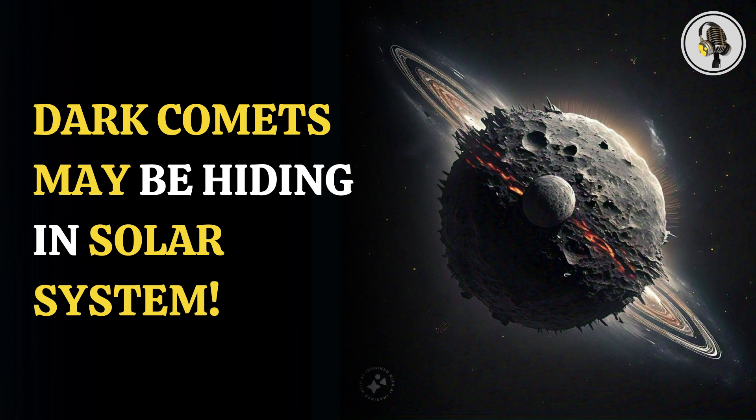Dark comets are a combination of both asteroids and comets. While asteroids are rocky bodies with no ice, comets are icy bodies. Asteroids orbit closer to the Sun, making any ice on it change directly into gas, also known as sublimation.